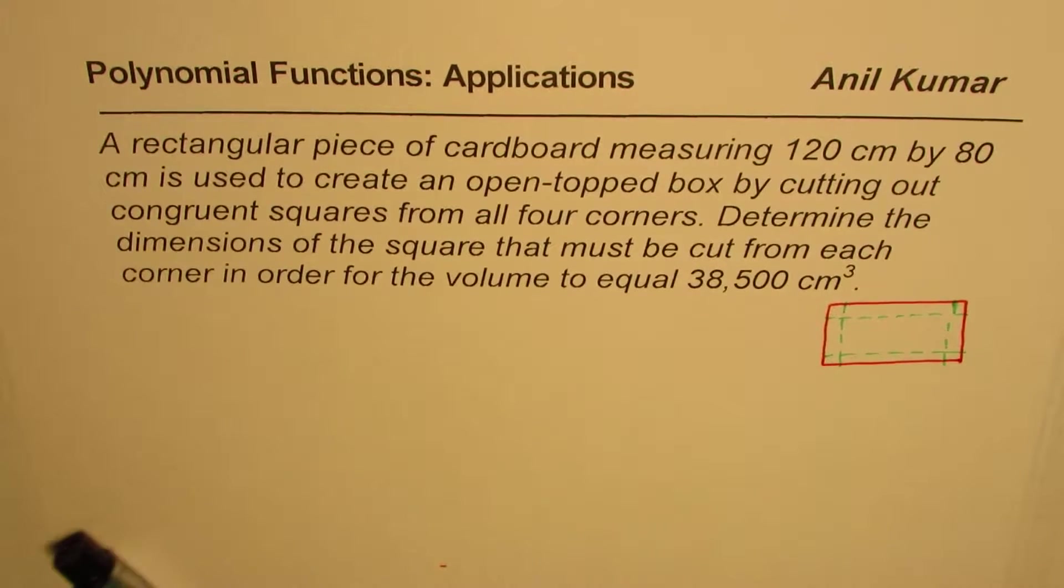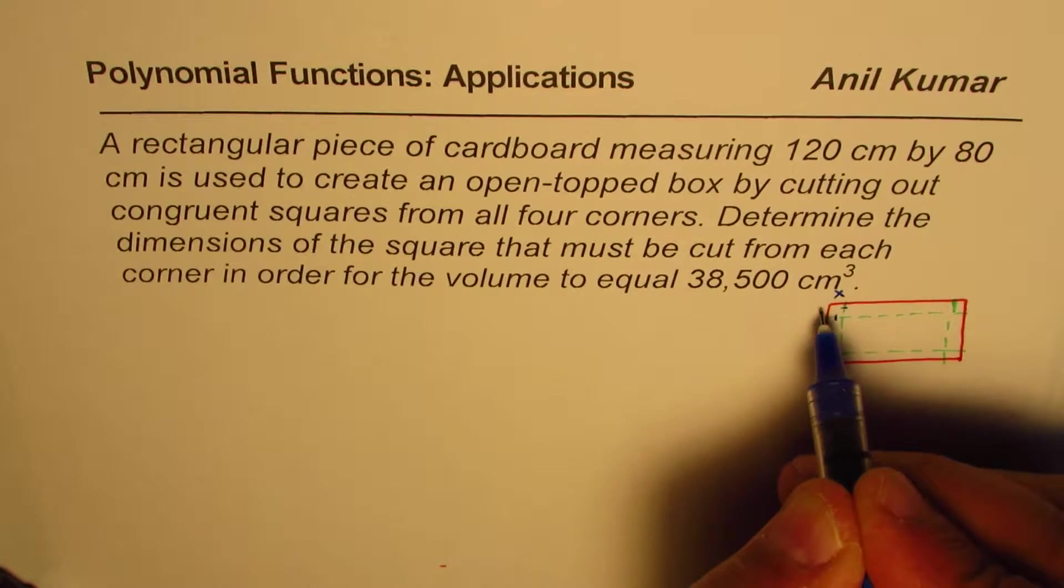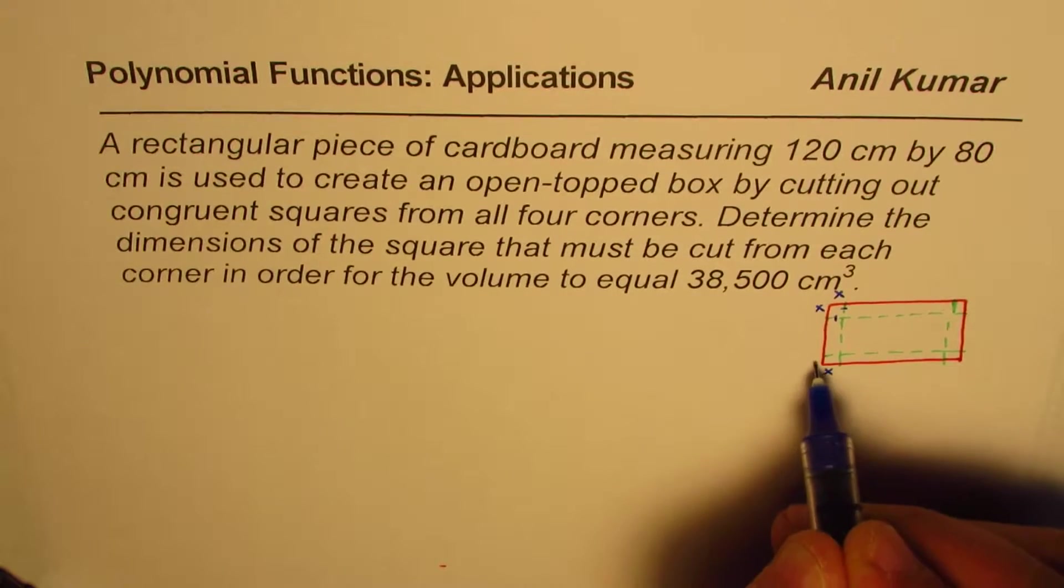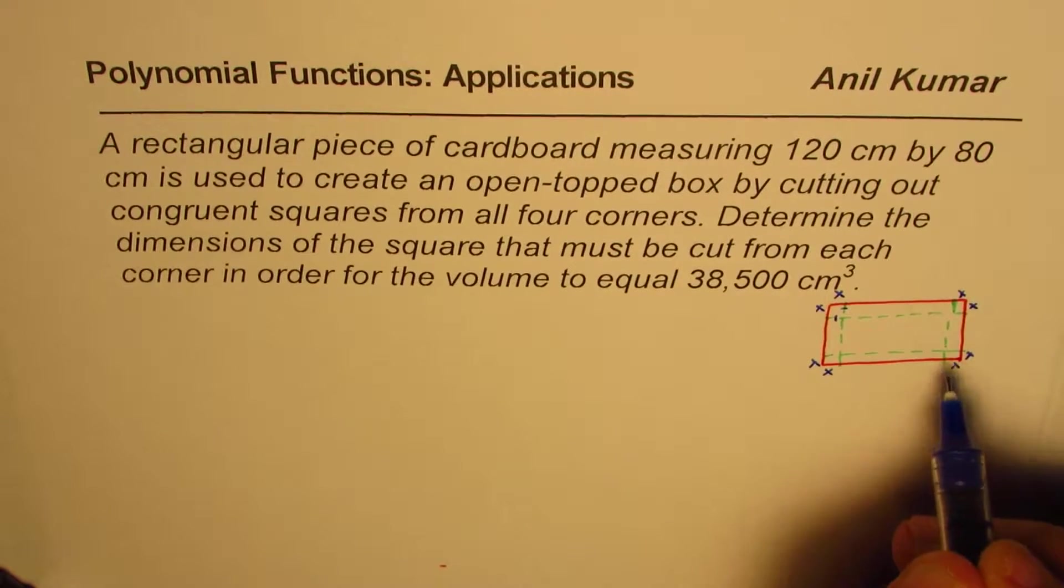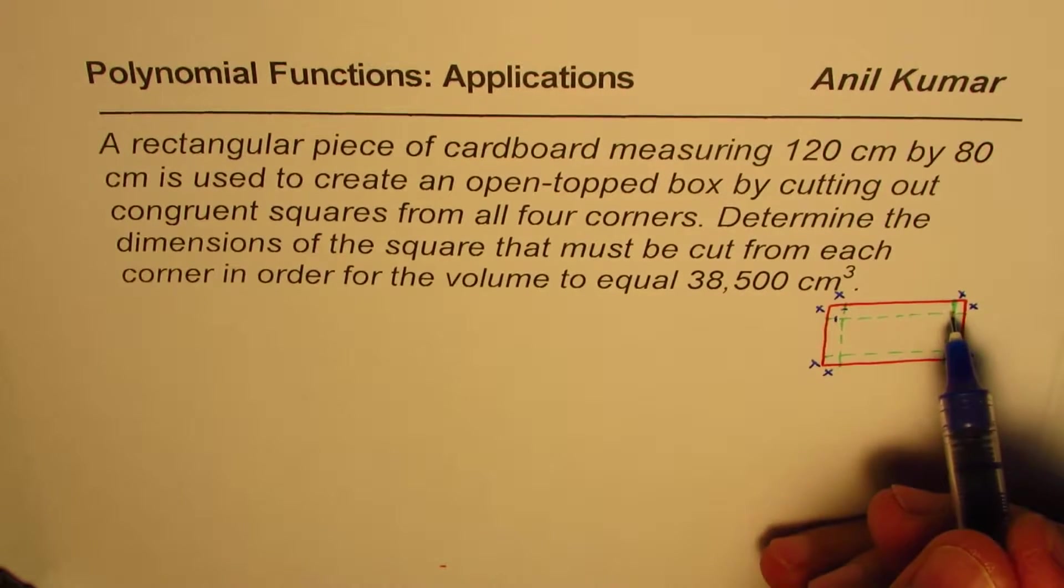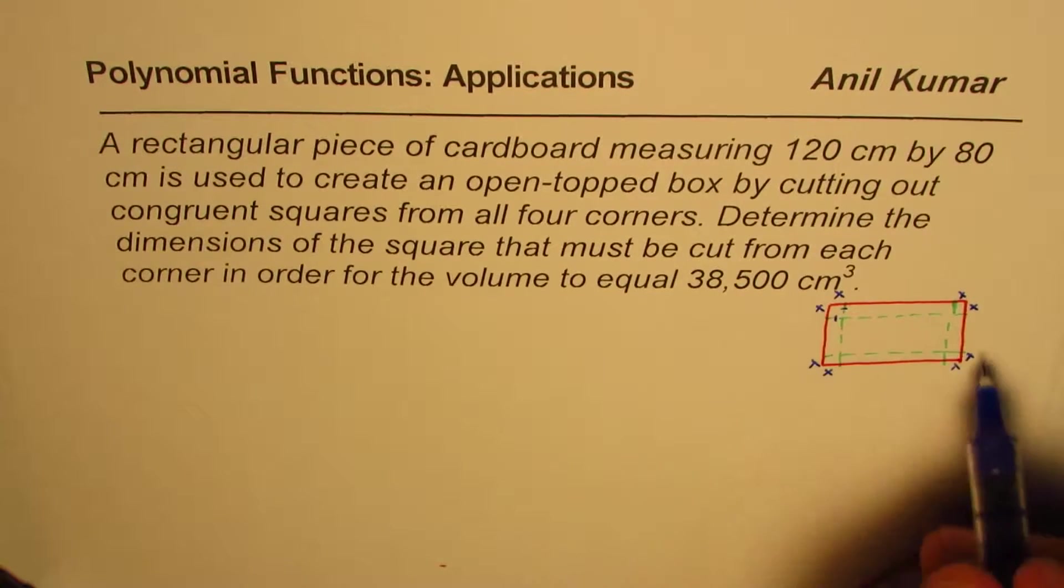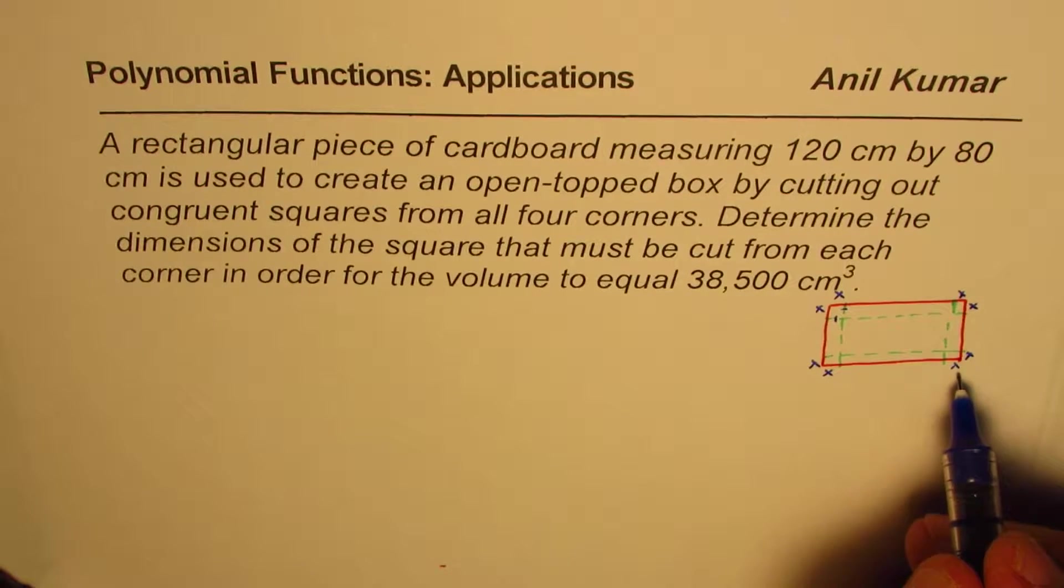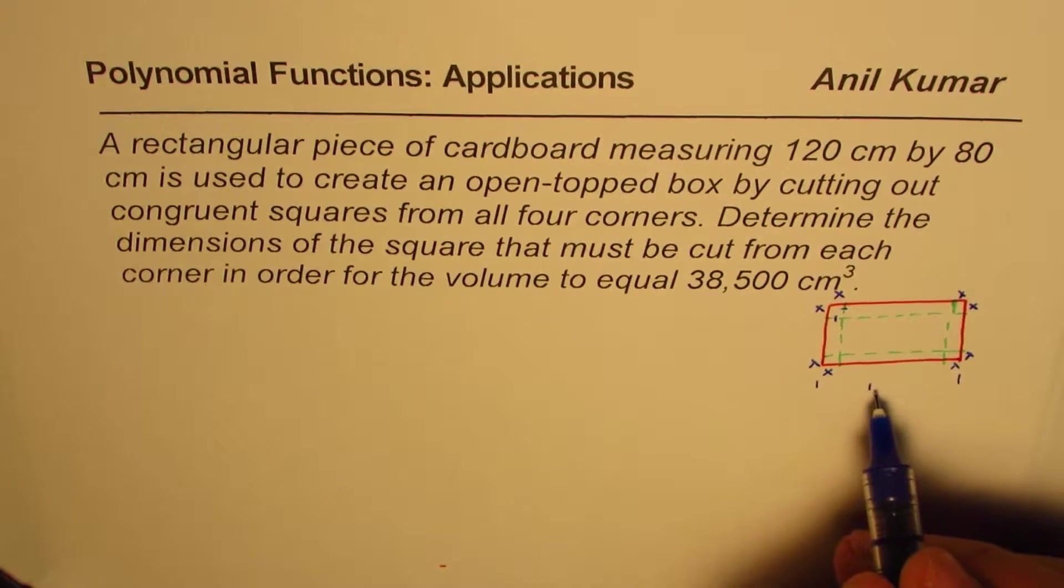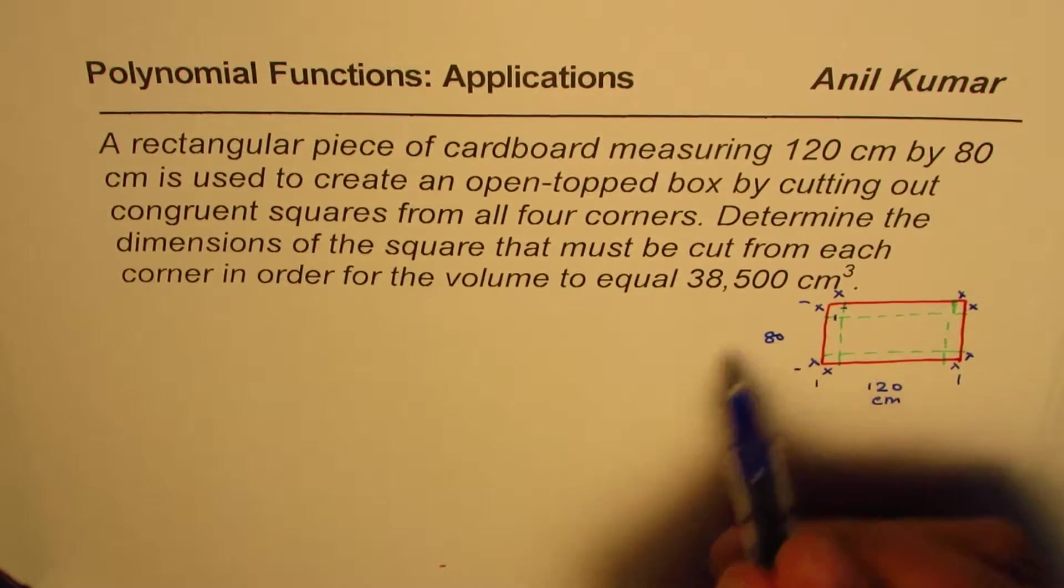Let's say the area which we are removing is a square X by X. So both sides, it is X. So that is the area which we are removing from the corners. After removing this, you can turn it up so it becomes an open top box. Dimension of this cardboard from here to here is 120 centimeters, and from here to there, the width is 80 centimeters.